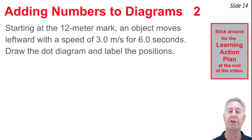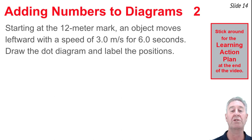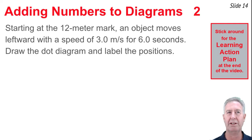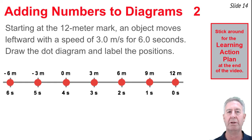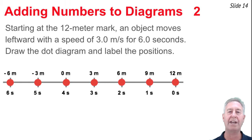Here's a second example: starting at the 12 meter mark, an object moves left at 3 meters per second for 6 seconds, meaning every second it travels 3 meters towards the left. I draw a number line with the 12 meter mark on the right side as the starting dot. Then every 3 meters towards the left of 12, I put a new dot — at 9 meters, then 6 meters, then 3 meters, then 0 meters — adding numbers for both time and position up to the 6-second mark. That's a second example of adding numbers to dot diagrams.